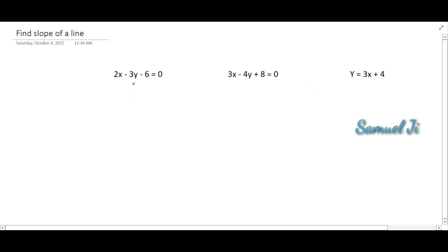The first question is 2x-3y-6 is equal to 0. This question is given in the form of ax plus by plus c is equal to 0. So what we have to do is just convert it into y is equal to mx plus c and we get the slope. So how can we convert this?